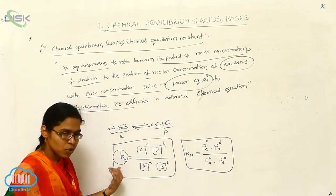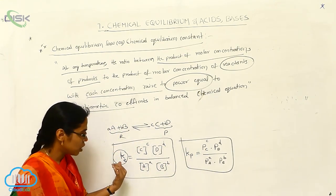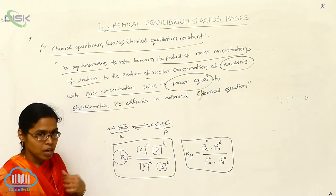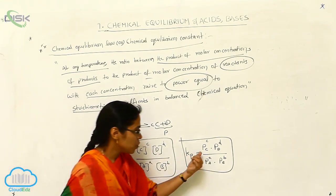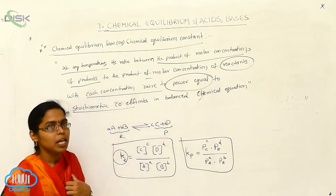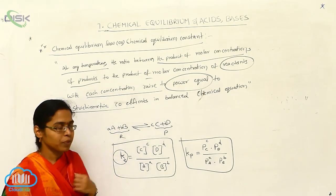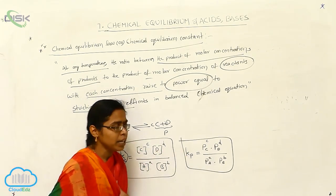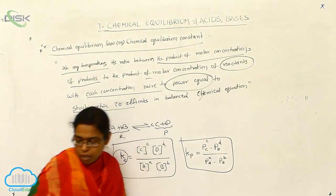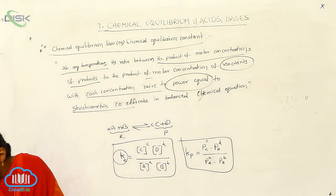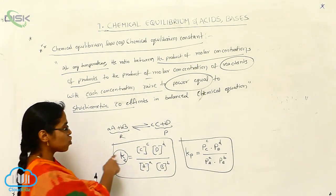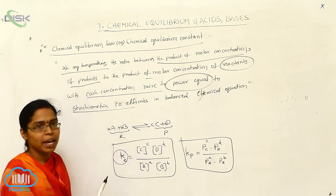Whenever you are using the concentration terminology, you can denote it with Kc. Whenever you are using the partial pressure, you can denote it with Kp. So it is Kc and it is Kp. Now, one more piece of information: the relationship between Kp and Kc.